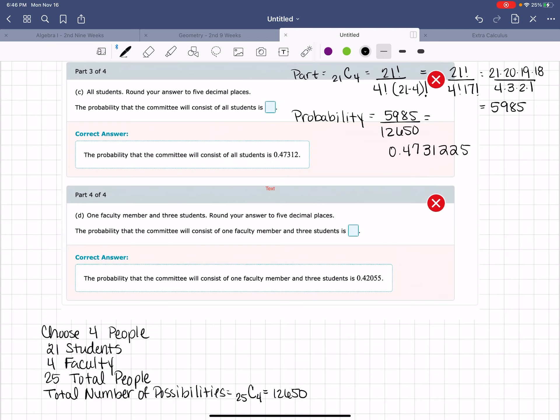When I say 5,985 divided by 12,650, this gives me 0.4731225. Once again, I need it to 5 decimal places. There's a 2 behind that. I can simply chop these off. And that should give me my answer of 0.47312.